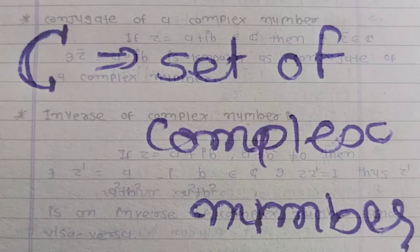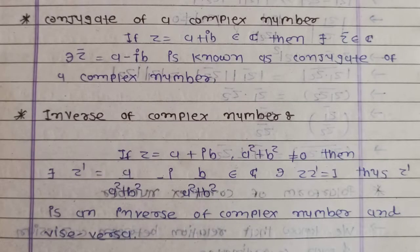For a complex number z, the real part of z is equal to a, and the imaginary part of z is equal to b. Also, i is equal to under root minus 1, that means i square is equal to minus 1.